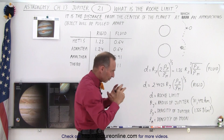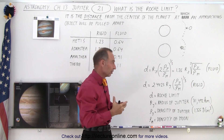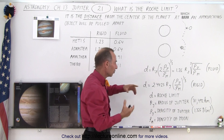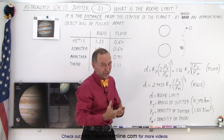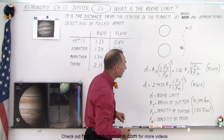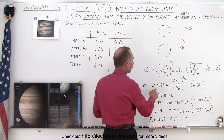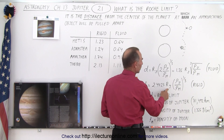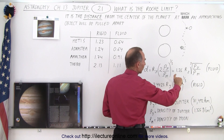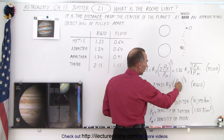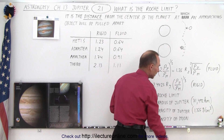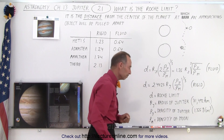Now, if it's made out of a fluid material, that would be the limit. But if it's made out of rocky material, which is typically the case for moons, then we take the number 2.44, times the radius of Jupiter, times the cube root of the ratio of the density of Jupiter divided by the density of the moon.